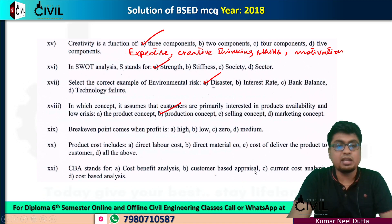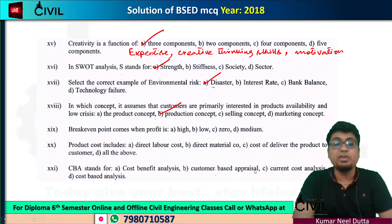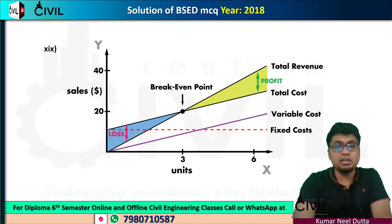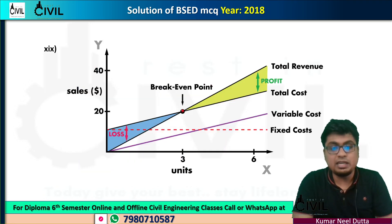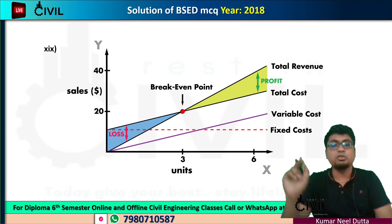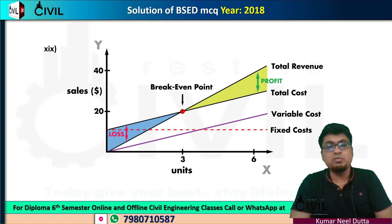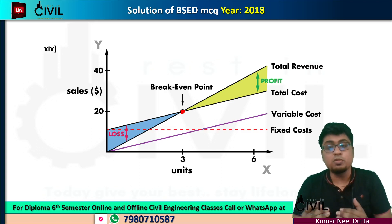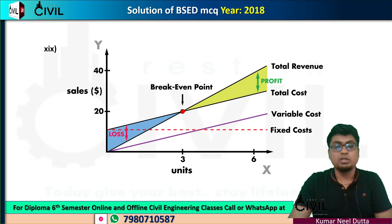Number 19: the break-even point comes when profit is zero — no profit, no loss. That point is known as the break-even point. If you plot losses and profits on a graph with sales on one axis and units on the other, the point where the two lines intersect — where profit is zero — is the break-even point.